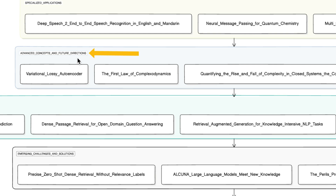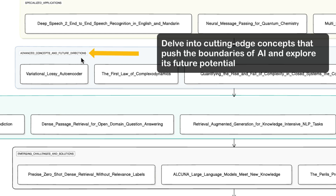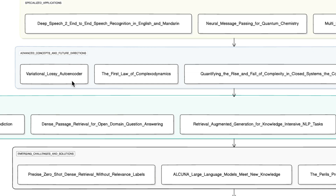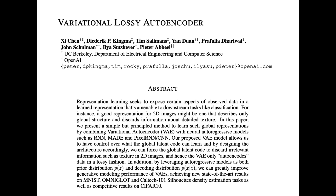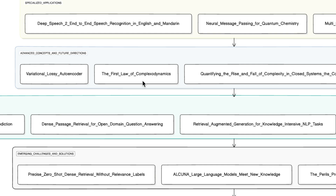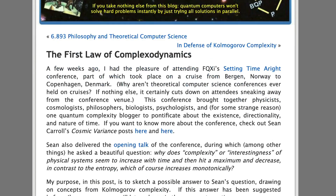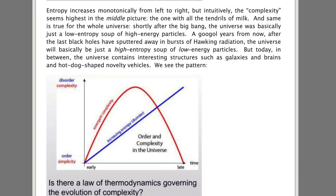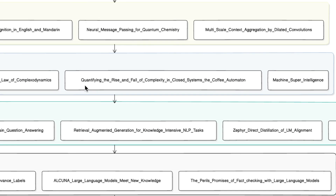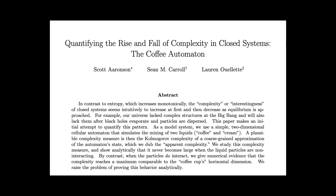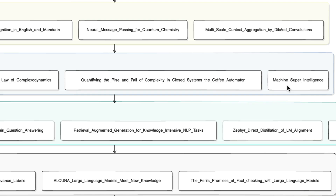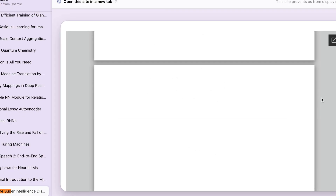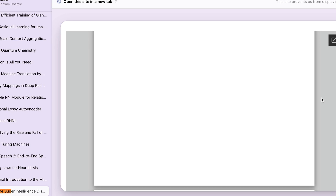Then we have Advanced Concepts and Future Directions, delving into cutting-edge concepts that push the boundaries of AI. The 'Variational Lossy Auto-Encoder' helps you understand advanced generative modeling techniques. 'The First Law of Complexodynamics' explores theoretical concepts about the evolution of complexity in intelligent systems. 'Quantifying the Rise and Fall of Complexity in Closed Systems' covers measuring complexity in AI. Lastly, 'Machine Superintelligence' — contemplating the possibilities and implications of super-intelligent AI systems.